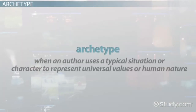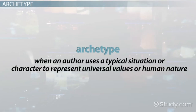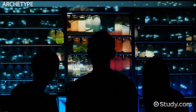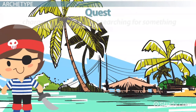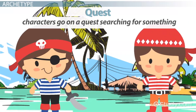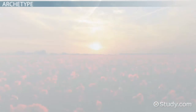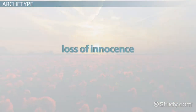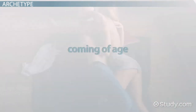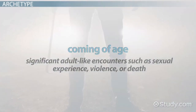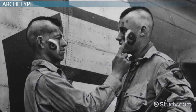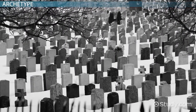An archetype is when an author uses a typical situation or character to represent universal values or human nature. There are many archetypes in Lord of the Flies that fall into two categories. The first is situational archetypes, of which there are two in this book. The first is the quest — the boys are looking for fire and trying to be rescued. The other situational archetype is loss of innocence, which can occur through significant adult-like encounters such as sexual experience, violence, or death. Events such as the boys painting themselves transforms them into savages, and the death of Piggy is also an irreversible loss of innocence.